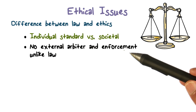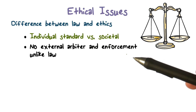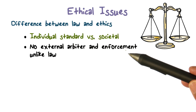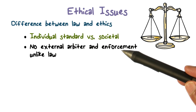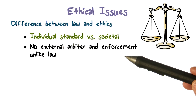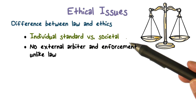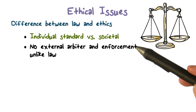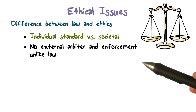Before we go further, it's worthwhile pointing out that when it comes to your ethical sense of right and wrong, there is no external arbiter or enforcement agency like law, where we have the police and the courts and things like that. So what's an example of an ethical code that you could think about?